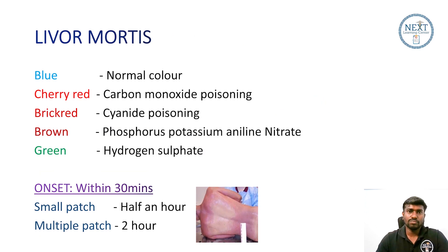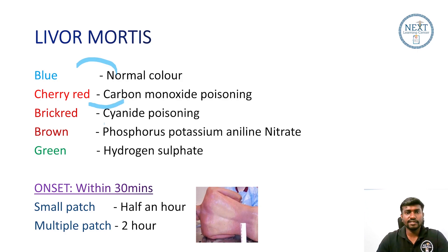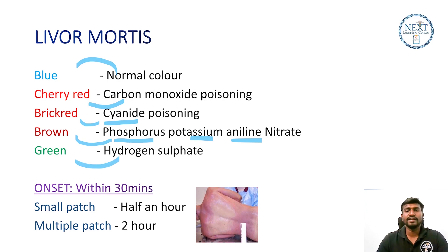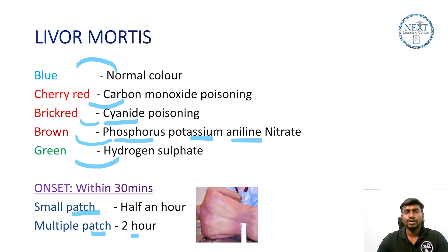In livor mortis, the body could show normal bluish color, or cherry red due to carbon monoxide poisoning. Cyanide poisoning causes brick red color, phosphorus or potassium compounds cause brown color, and greenish color is due to hydrogen sulfide. Livor mortis can occur within 30 minutes as small patches, and multiple patches can be seen within 2 hours. This was a quick revision of postmortem changes.